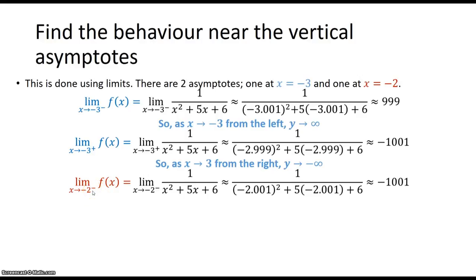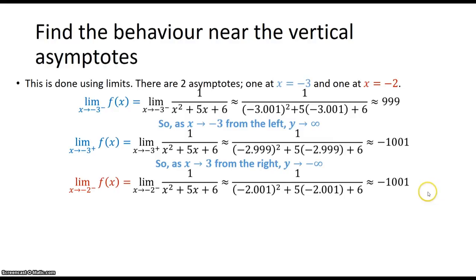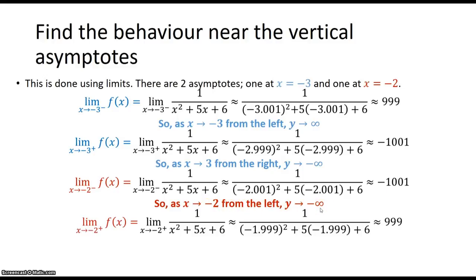For the other asymptote at x equals minus 2: approaching negative 2 from the left, we use negative 2.001 and get approximately negative 1001, so y approaches negative infinity. And approaching negative 2 from the right, y approaches positive infinity.